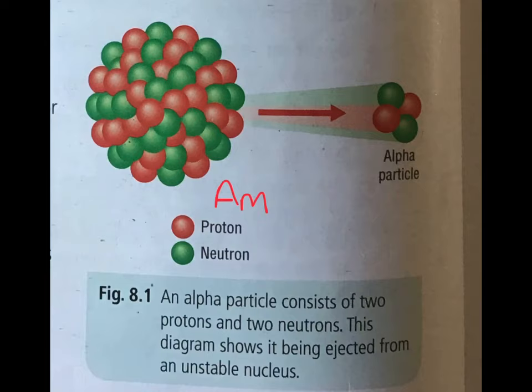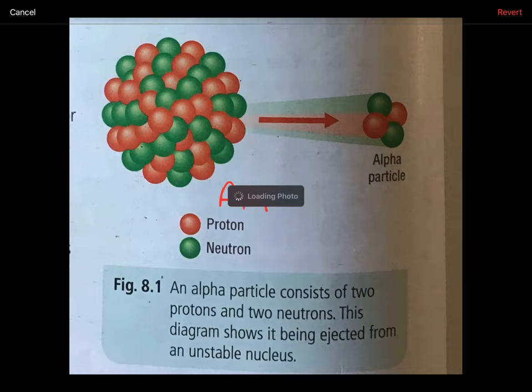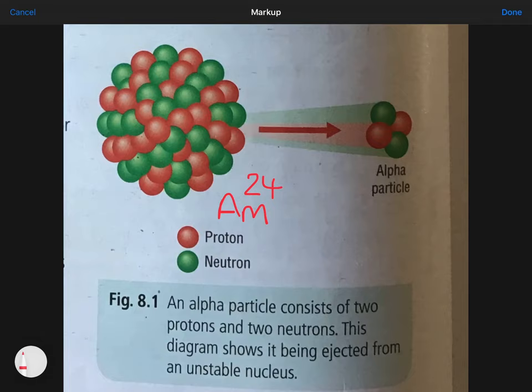I'm going to talk to you about alpha radiation first. You can see here that you've got an unstable nucleus, something like Americanum 241. Just to revise for a second before we go any further, the bigger number is the mass number. The mass number is the number of protons and neutrons in the nucleus. This is only showing you the nucleus of the atom, not the outer electrons.